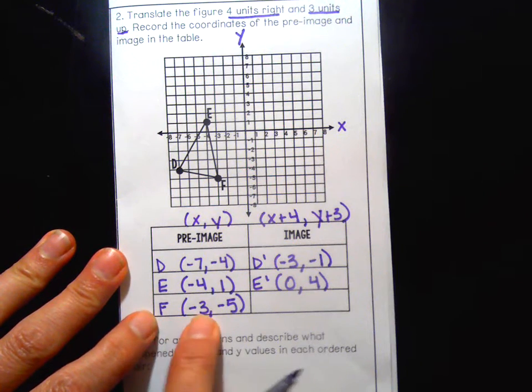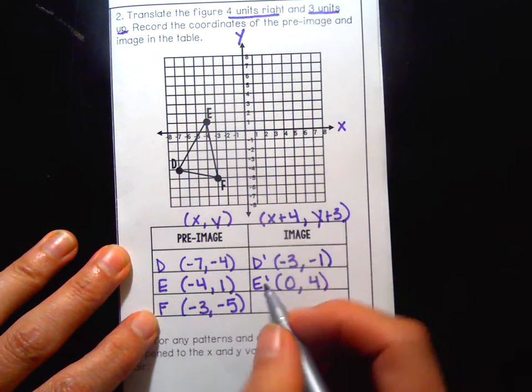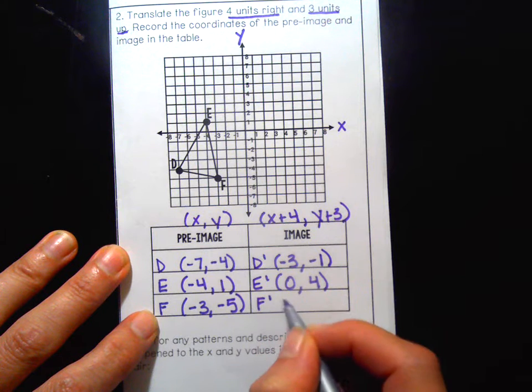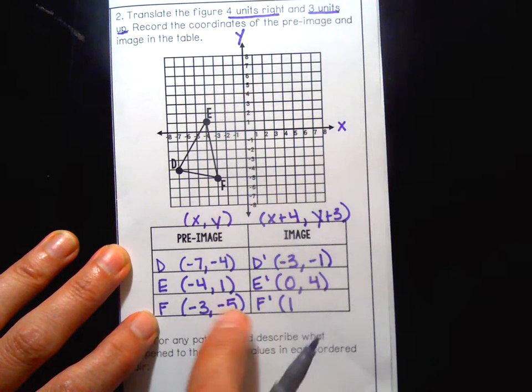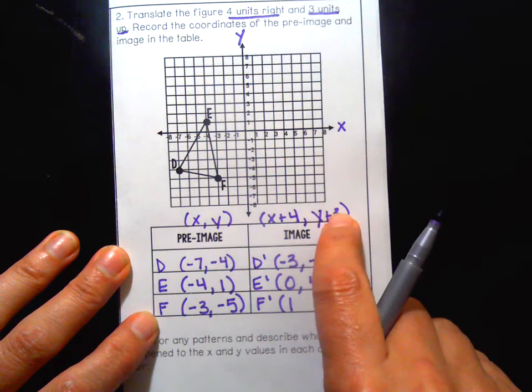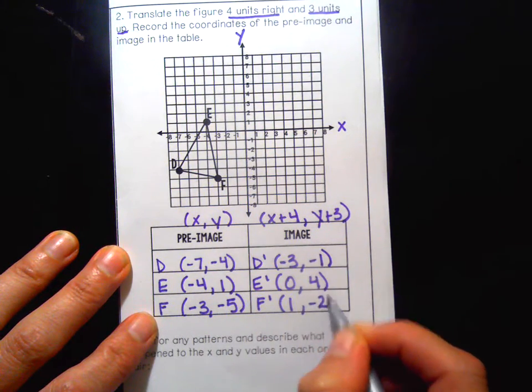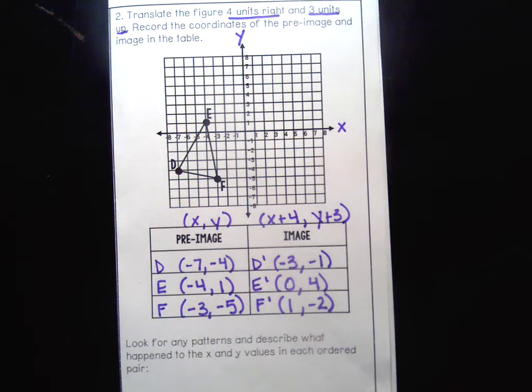F, negative three plus four is one. Negative five plus three is negative two. So I applied my algebraic rule and that should make a congruent triangle.